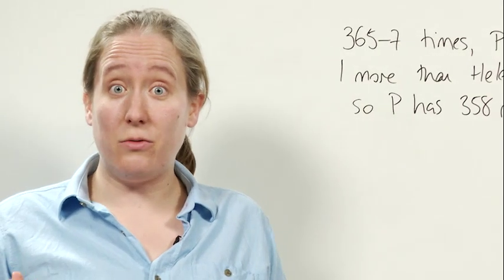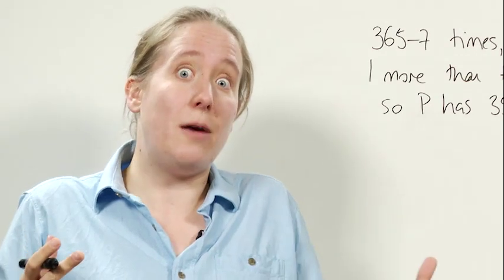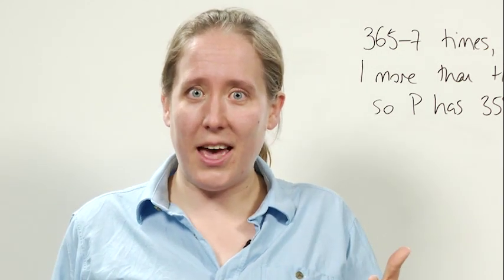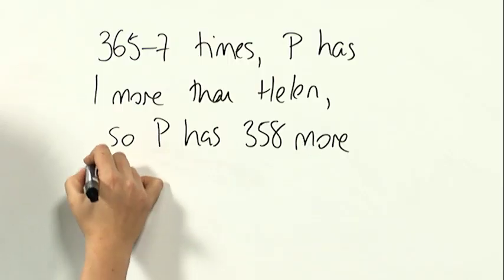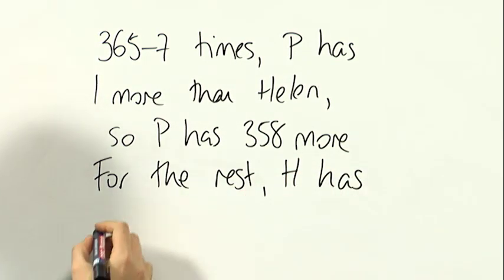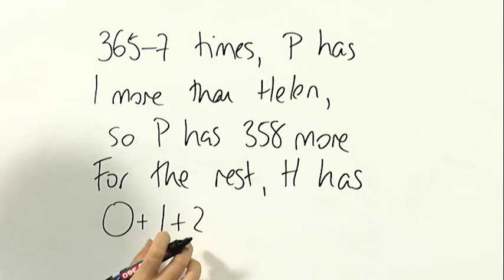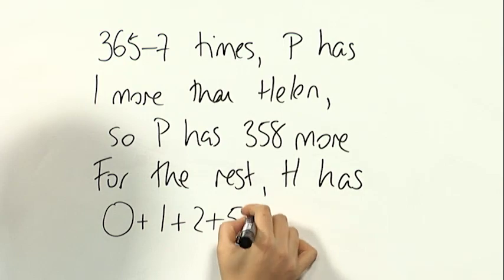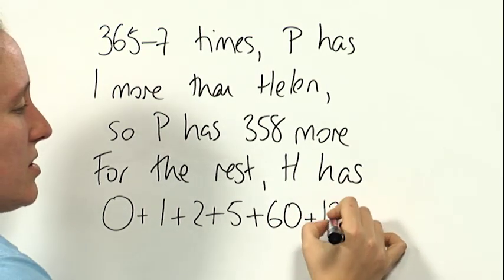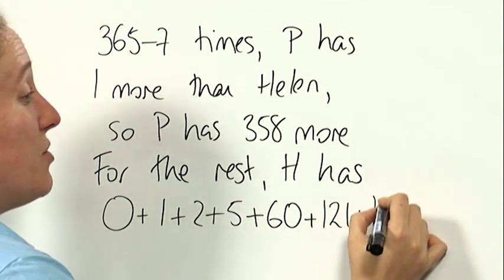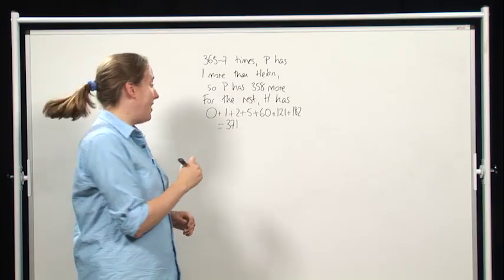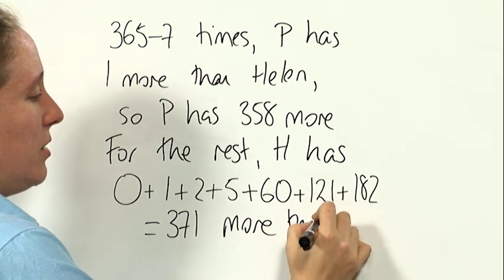And then we also have to think about these 7 relevant factors. So for each of those factors k, Helen has k minus 1 more than Phil. So for the rest, we need to think about the factors of 366 that we found before. And for each factor k, Helen has k minus 1 more than Phil. So for the rest, Helen has, let's see, so we had a factor 1, which gives us 0. And then 1 plus 2, these were the factors 2 and 3. And we had 5. We had a factor of 61, which gives us 60. We had a factor of 122, which gives us 121. And we had a factor of 183, which gives us 182. And when we add those up, that gives us 371. So Helen has this more than Phil.